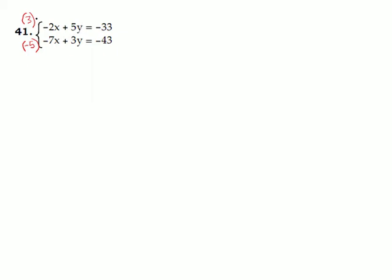So first equation. When you multiply 3 by all those terms, 3 times negative 2x gives us a negative 6x. 3 times 5y is 15y. 3 times negative 33 is negative 99.